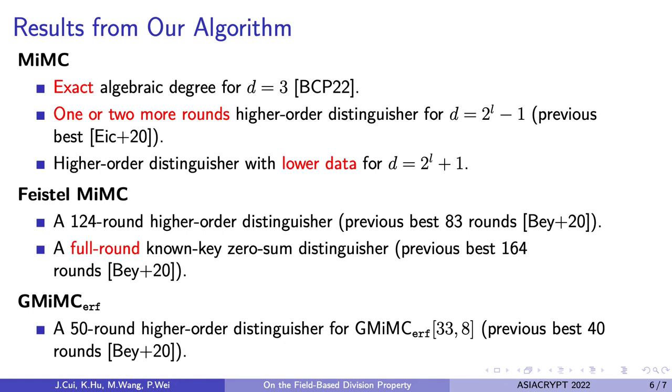For Feistel MiMC, the previous work only attacked 83 rounds, but we can attack 124 rounds, and we can also give a full-round known-key zero-sum distinguisher.